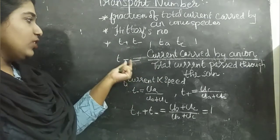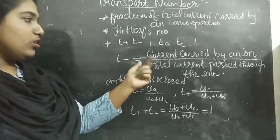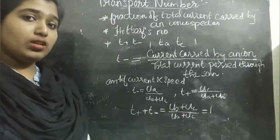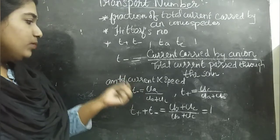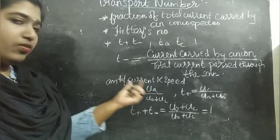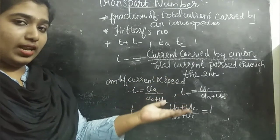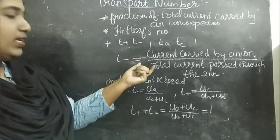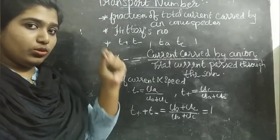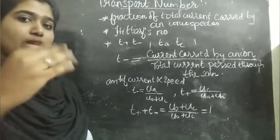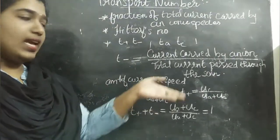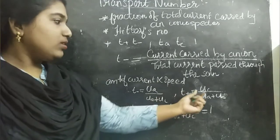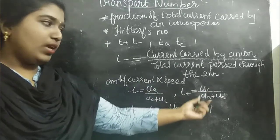For the cation, T+ equals the current carried by the cation divided by the total current passed through the solution. The amount of current carried by a particular species is proportional to the speed of that ion. So T− equals Ua (speed of the anion) divided by (Ua + Uc), and T+ equals Uc (speed of the cation) divided by (Ua + Uc).